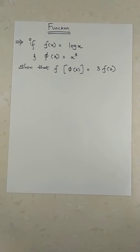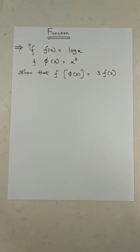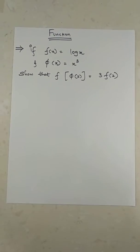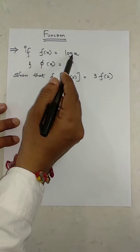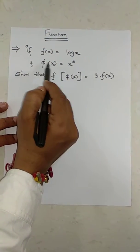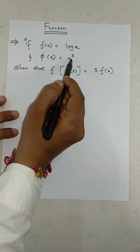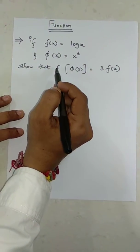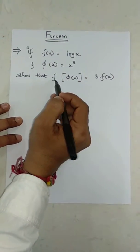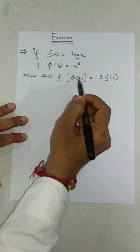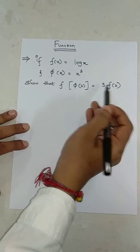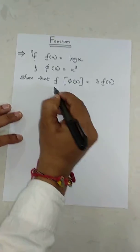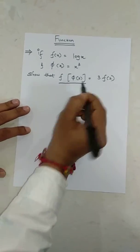Hello friends, today's topic is functions. If f(x) = log x and φ(x) = x³, then show that f(φ(2)) = 3f(2). Now, left hand side: f of φ(2).